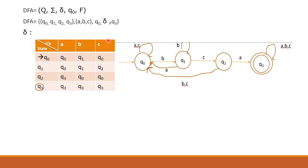This is our transition table. The states are Q0, Q1, Q2, Q3, with inputs A, B, C. Q0 is the starting state and Q3 is the final state. Q3 transitions on A, B, and C all loop back to Q3.